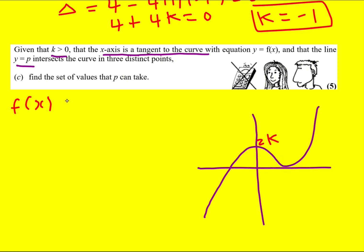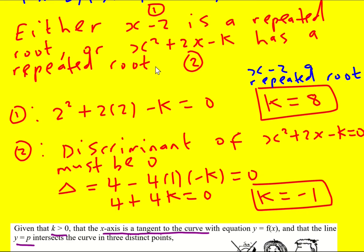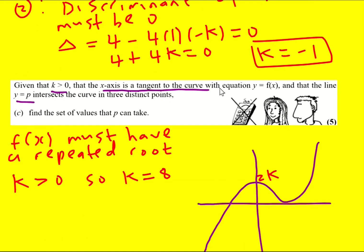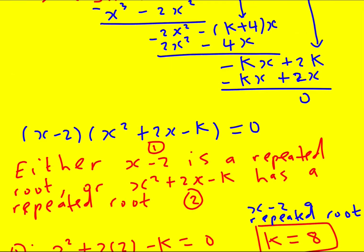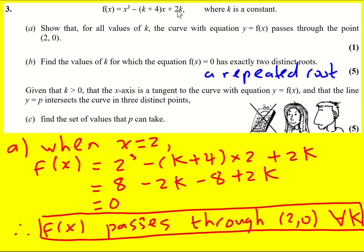So f(x) must have a repeated root and k is greater than 0, so k equals 8. Remember in that last question we looked at the situation where there was a repeated root and these are the two possibilities. So k equals 8, and that means f(x) is going to be x³ - 12x + 16. All I've done is substituted 8 into here, minus 12x plus 16.